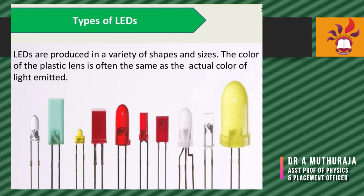The types of LEDs: LEDs are produced in varied shapes and sizes. The color of the plastic lens is often the same as the actual color of the light emitted. You can see different kinds of LEDs and their various applications.